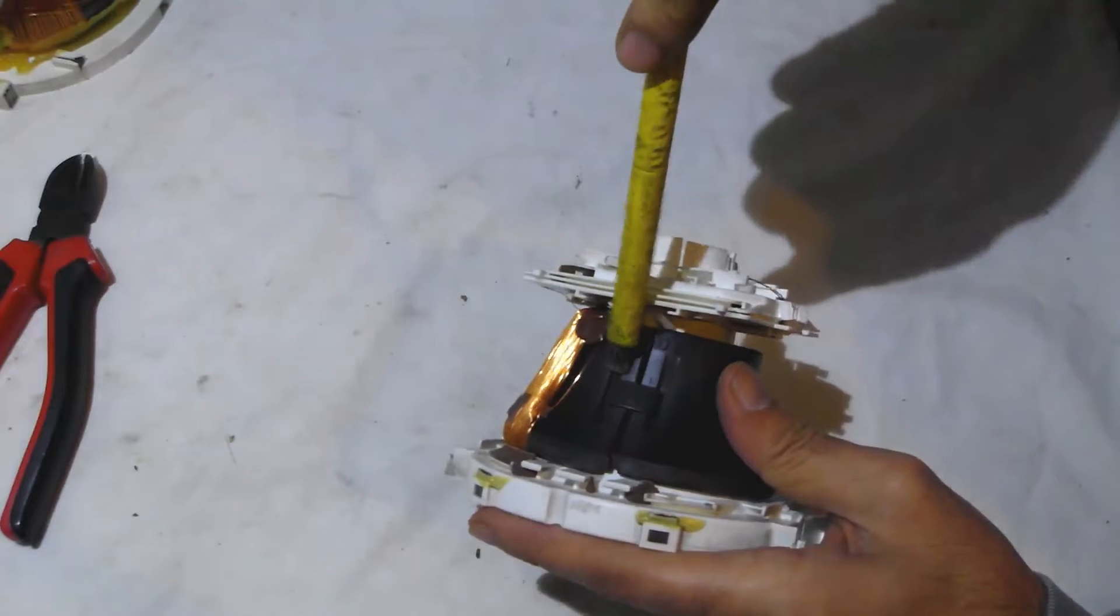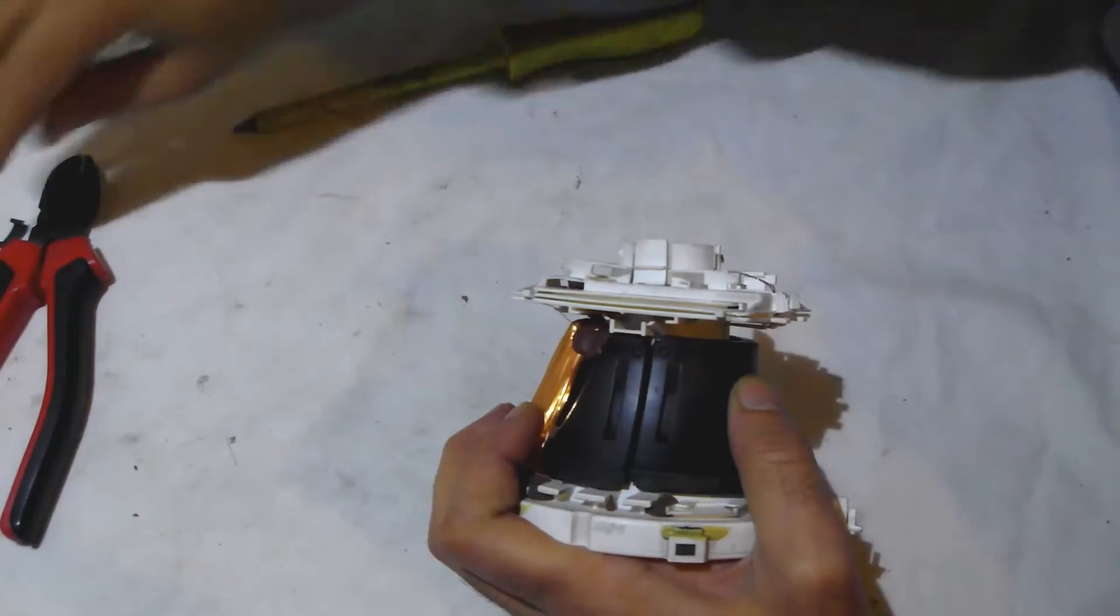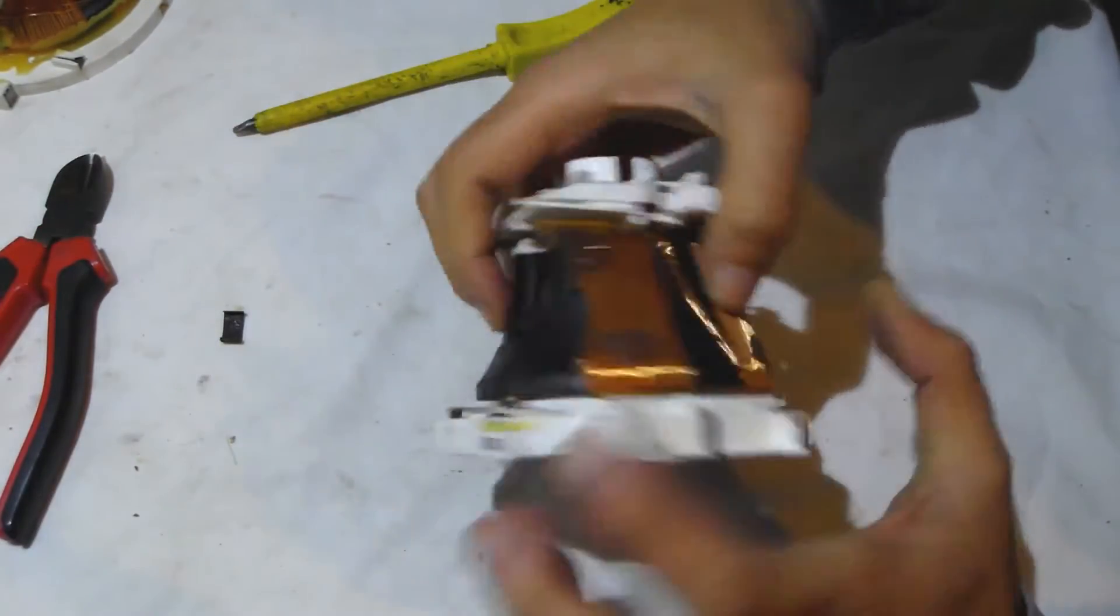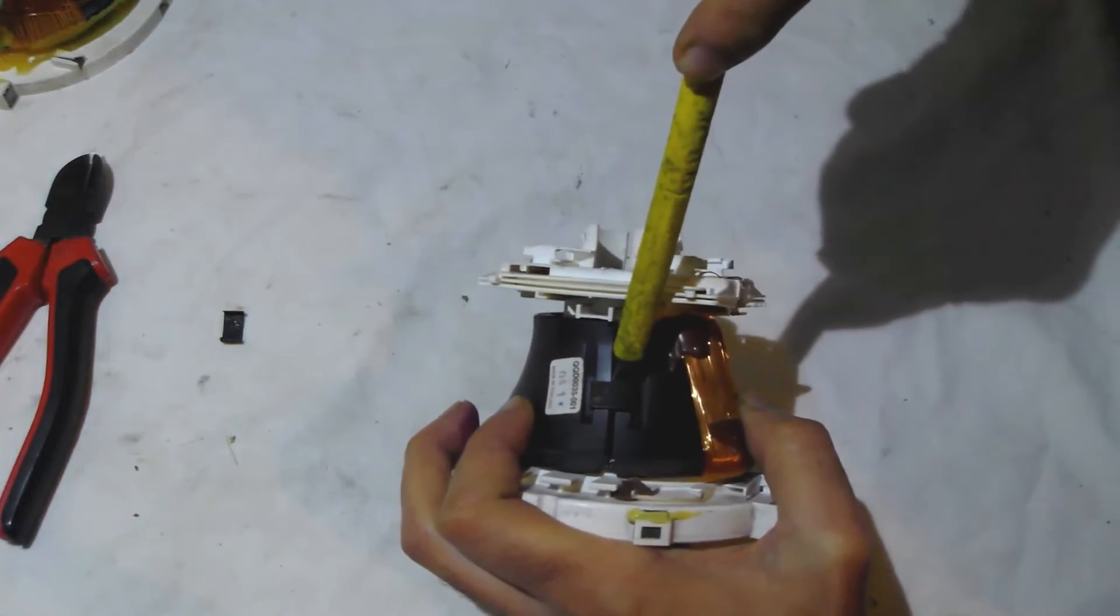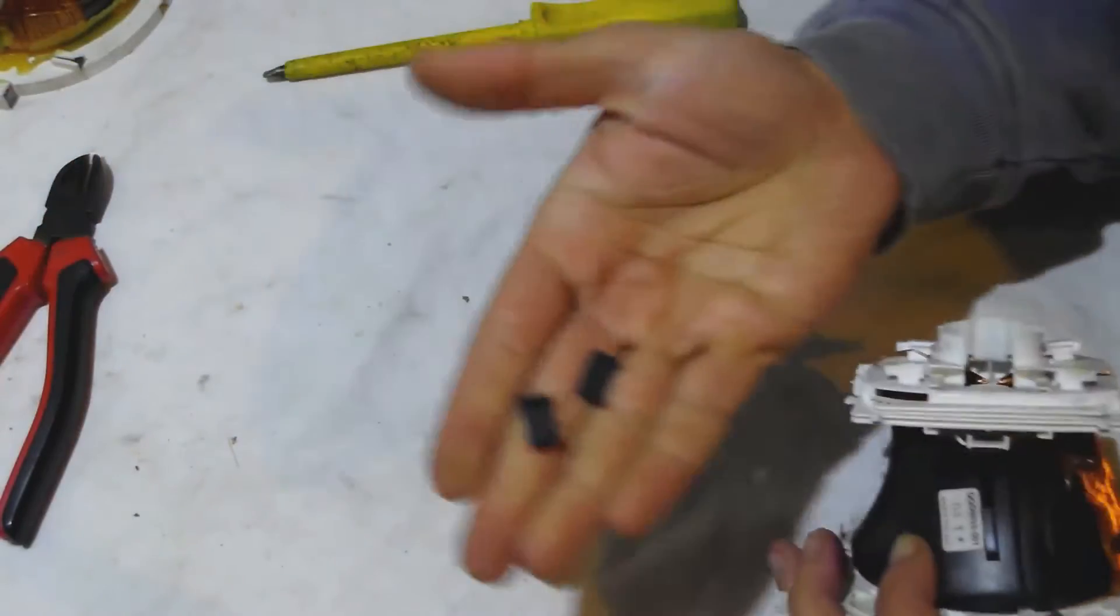What I like to do is get my screwdriver under it and pry it off. Now do be careful because these do come flying off. Safety first as a friend of mine would say. And we go the other one and off it comes. So now we've got two clips.